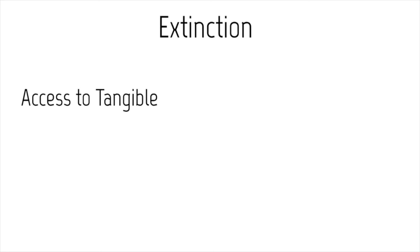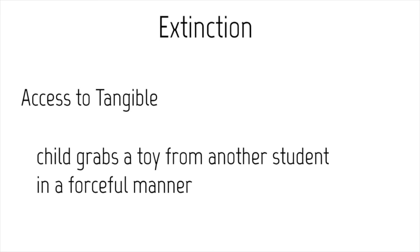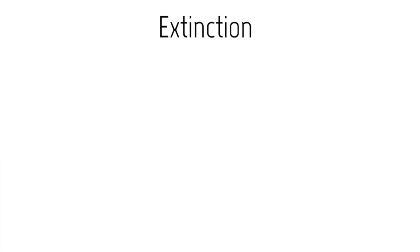For access to tangibles: if a child runs up to another child and grabs a toy in an aggressive way that may leave a mark or scratch, we want to replace that behavior with something more functional. To apply extinction for a behavior that is access-to-tangible maintained, we simply block — we don't allow the child to gain access to the item through grabbing or scratching. We may have other interventions in place as well, but the extinction component is blocking.